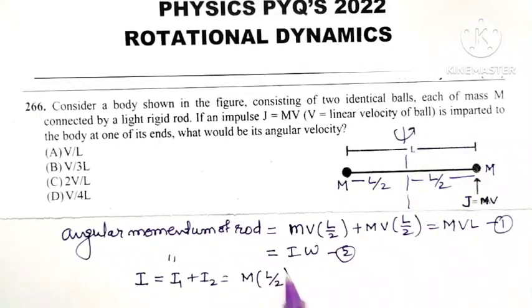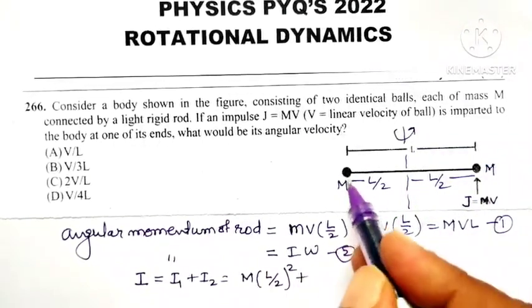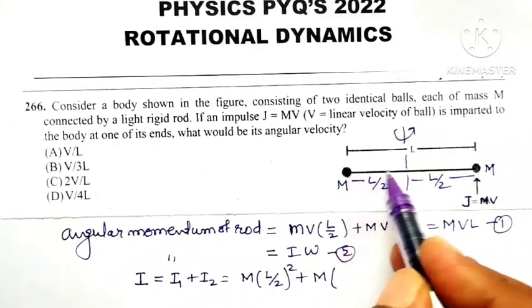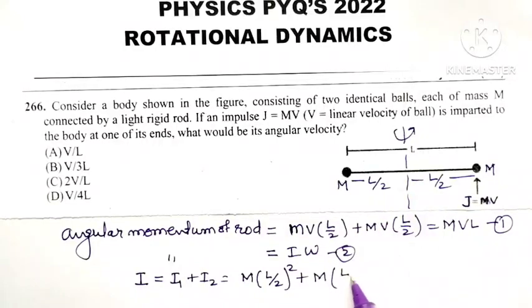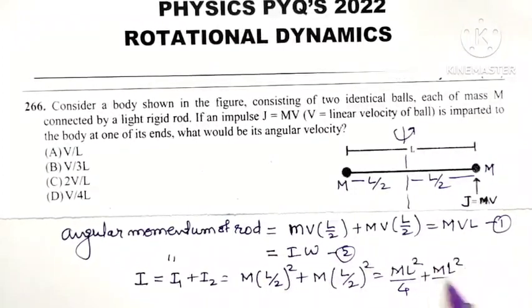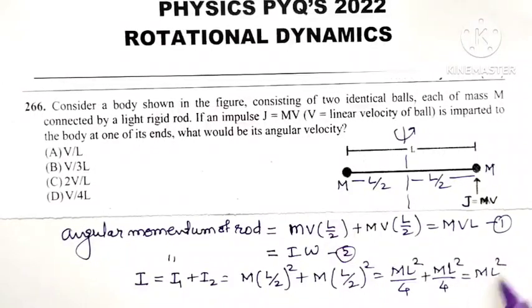So it is equal to M L squared divided by 4 plus M L squared divided by 4, or it is simply M L squared divided by 2.